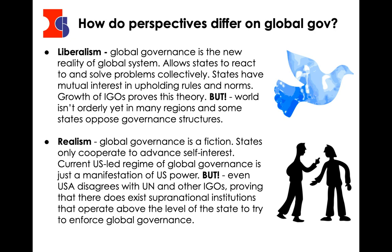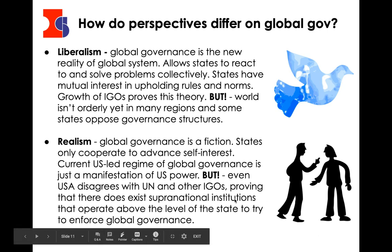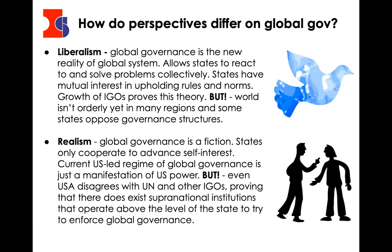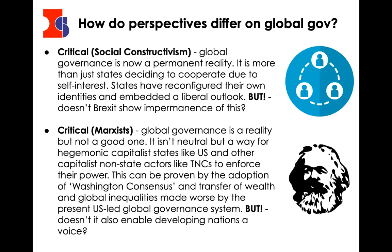However, in some places like the Middle East and parts of Africa, there really hasn't been much governance, which might indicate that anarchy and realism still exist in the world. Realists argue that global governance is a fiction — states only cooperate to advance self-interest. The current US-led regime of global governance is just a manifestation of US power. But even the USA, the most powerful nation, has disagreements with the UN and other IGOs, which does show there is an independent force of governance in the world that opposes even the hegemonic power.